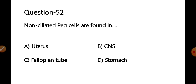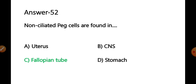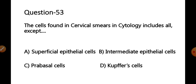Question 52: Non-ciliated peg cells are found in — options: A) uterus, B) CNS, C) fallopian tube, D) stomach. A peg cell is a non-ciliated epithelial cell within the uterine tube, also known as the fallopian tube or oviduct. These cells are also called intercalated or intercalary cells and represent one of three epithelial cell types found within the normal fallopian tube epithelium, comprising less than 20% of total cells. The correct answer is option C — fallopian tube.